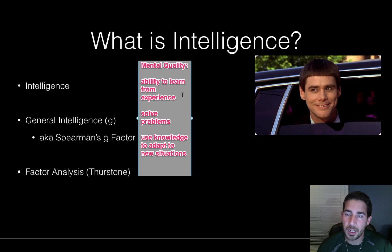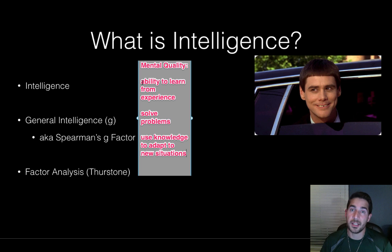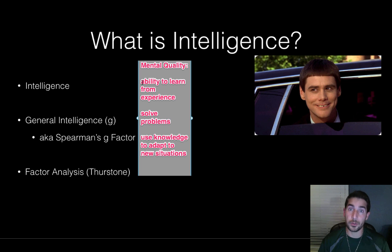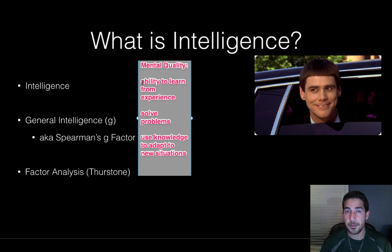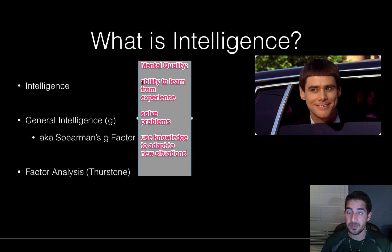So we're talking about these three things. To learn from experience — you've probably seen a dog that does the same thing over and over again, running into a door, keeps hurting itself. Part of intelligence is learning from your experiences. Part of it is solving problems — if you're faced with a dilemma, can you navigate it successfully? And the third prong is using what you know to adapt to new situations.